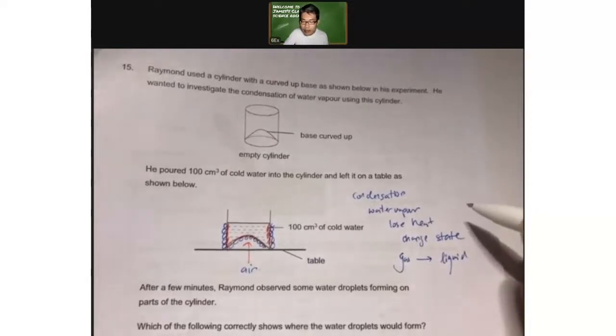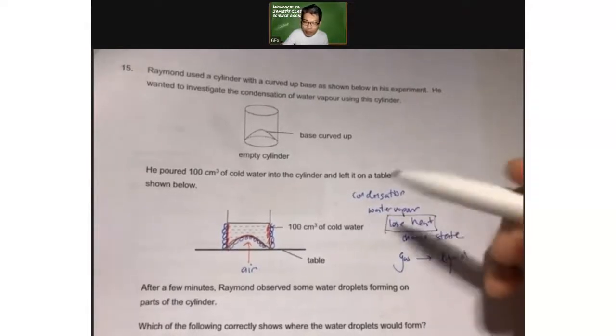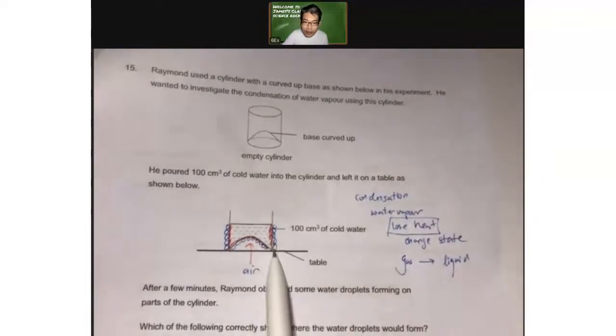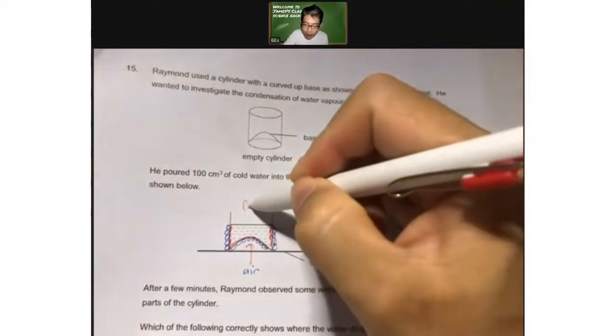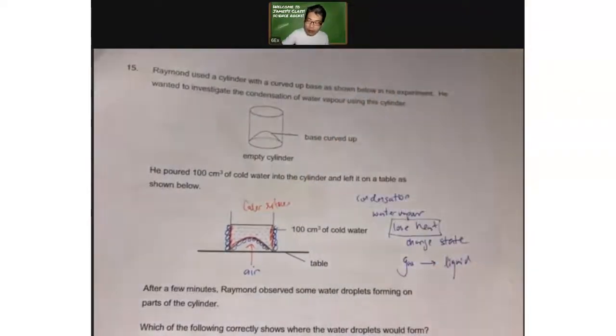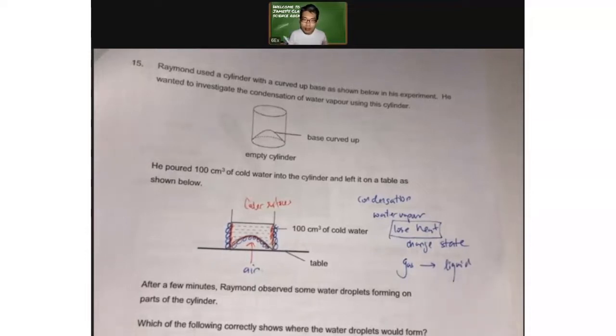I know that under the water cycle questions, the condensation is a process where the water vapor will lose heat and change states from gas to liquid. And this happens on a cooler surface. That's where the losing of heat happens.